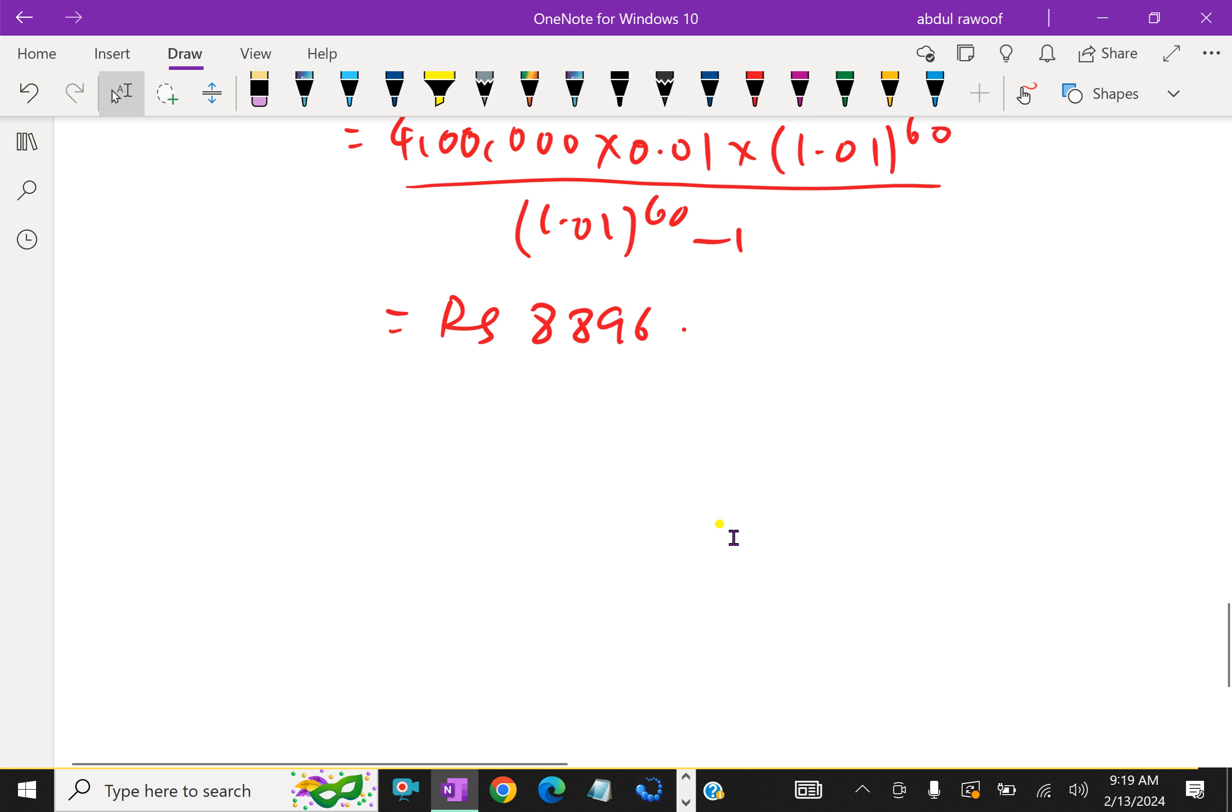Here note the point. Now she has to pay 8,896 EMI for 5 years, that is 60 months. Therefore, if you multiply 8,896 into 60, which gives... 8,896 into 60, which gives rupees 5 lakhs 33,760.